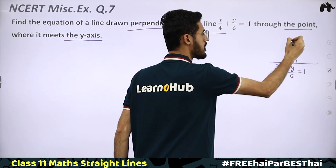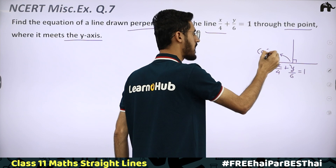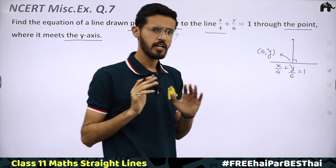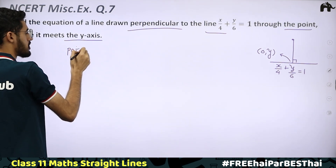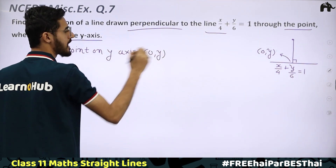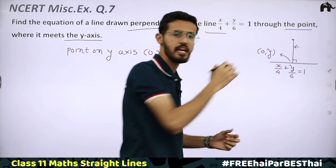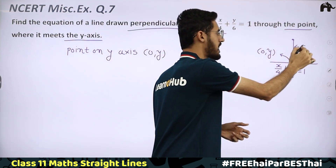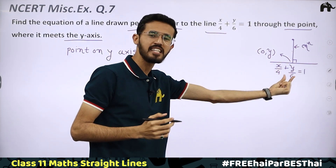Since the lines are perpendicular, if we find the slope of the given line, we can get the slope of the perpendicular line. With slope and point, we use point-slope form to find the equation. Let us first find the slope of the line x/4 + y/6 = 1.